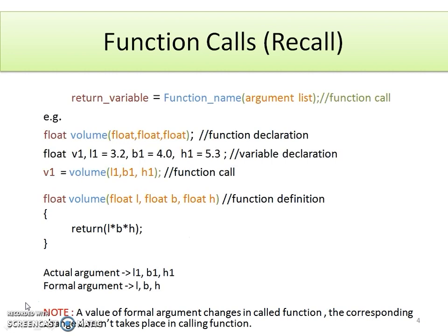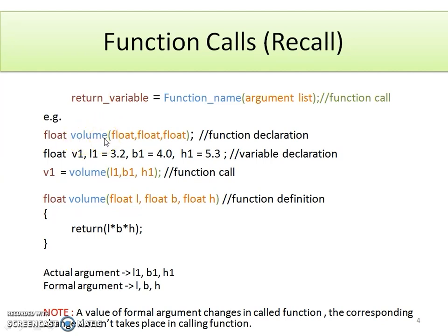Let's recall function calls. Here I have taken one example of function volume. First, how to declare it? It is declared with the help of a return type, function name, and its argument list. Let's see the example where volume is a function where three parameters are needed — all of type float — and its return type is float. This is the function declaration. V1, L1, B1, and H1 are the variable declarations.